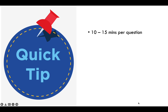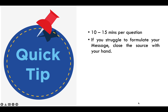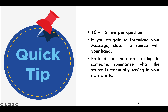Some quick tips: always spend 10 to 15 minutes per question. Keep checking the clock — don't spend too long, or you'll give yourself less time for more difficult skills. If you struggle to formulate your message, close the source with your hand and imagine you're explaining it to someone — summarize the main ideas in one sentence. That is actually your message: summarize what the source is saying in your own words.